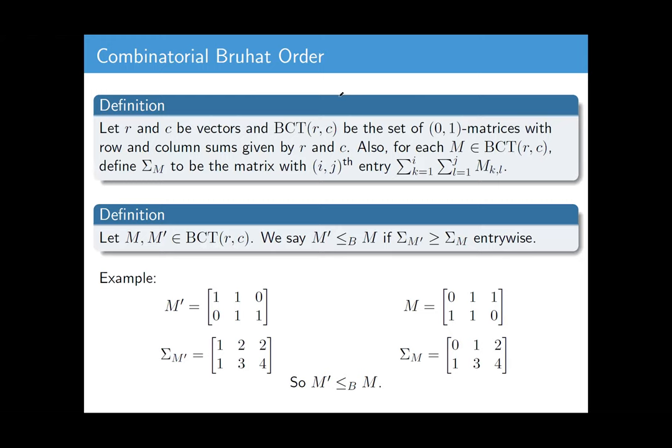So for me, whenever I say BCT, that stands for binary contingency table. That's one of these 0,1 matrices with fixed row and column sums. Here R is the vector of all the row sums, and C is the vector of all the column sums. And so now I'm going to define a combinatorial order on these matrices. I'll call it the combinatorial Bruhat order. The idea is, for a given matrix M, I'll build a matrix called sigma sub M, such that each entry is the sum of all of the entries above and to the left of it. So now if I have two such matrices, M and M prime, that are BCTs, I'll say that M prime is less than or equal to M if sigma M prime is greater than or equal to sigma M entry-wise.